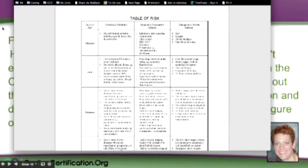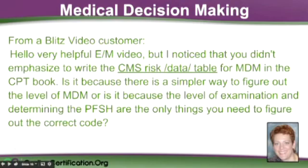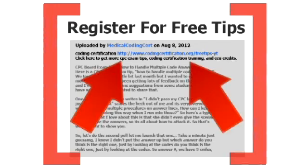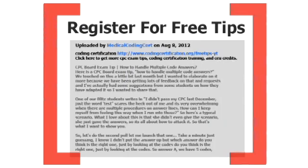If you do need it, I'll eat my hat — and if so, it would probably be one of 10 questions, and I still doubt it. That would be like having to learn VIR coding — vascular interventional radiology — to take the CPC exam. They might ask you some things about the families of arteries, but you're not being tested on being a super detailed coder in every single specialty. They want you to have a broad base of knowledge. Get more CPC exam tips, coding certification training, and CEU credits at www.codingcertification.org.